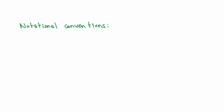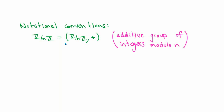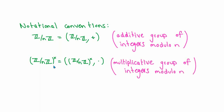A couple of notational conventions: when we write Z mod nZ as a group, the group structure is addition — this is the additive group of integers modulo n. When we write (Z/nZ)×, the group structure is multiplication — this is the multiplicative group of integers modulo n. From now on when we write these groups, we generally won't indicate the binary operation, since it should be implicit from context.